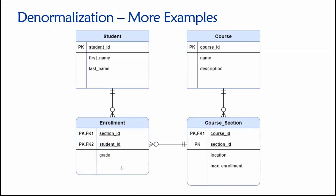So here's a lovely four-table design that is fully normalized, allowing us to keep track of all students, all courses, all course sections, and which students are enrolled in which sections. That would support the needs of a university or a large secondary school. However, we're talking about denormalization in this lecture, so let's introduce some problems that will require us to denormalize.